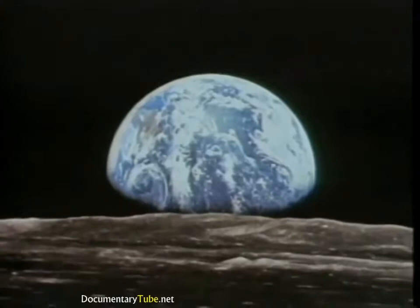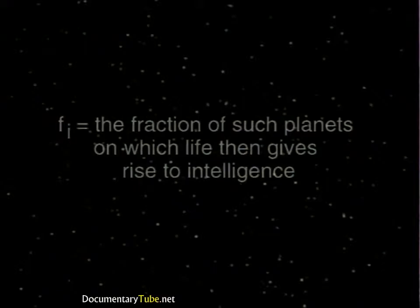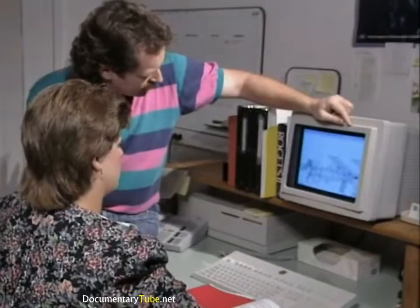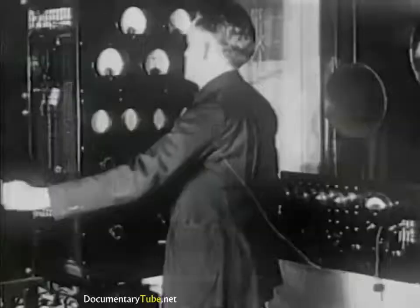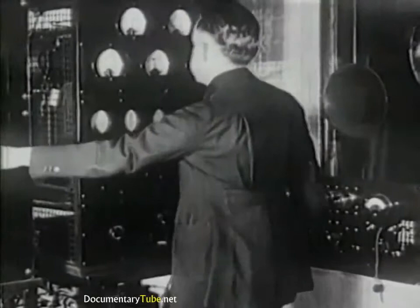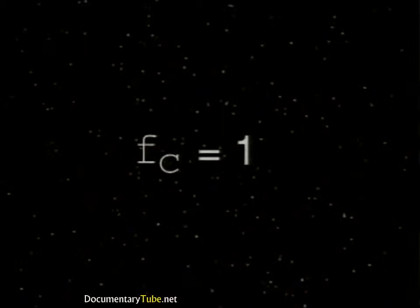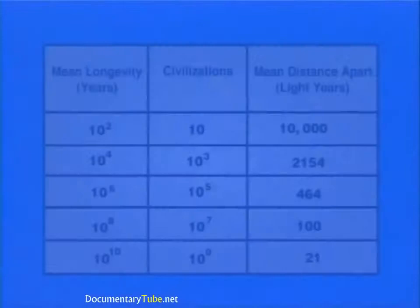FI refers to the fraction of planets on which life actually gives rise to intelligence — the cognitive type of intelligence possessed by human beings — and some estimate this value to be 0.05. Fc is equal to the fraction of such planets in which intelligent life evolves to an advanced communicative technology. Most people argue that the probability that communicative technologies will arise from intelligent life is very high, so Fc is chosen to equal one. L, the final variable in the Drake equation, refers to the average longevity of civilizations in the galaxy. Its value is the most subjective in the equation, and hence the most difficult to predict.